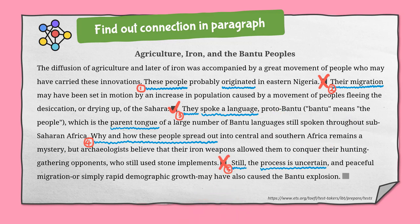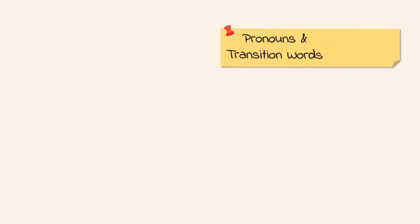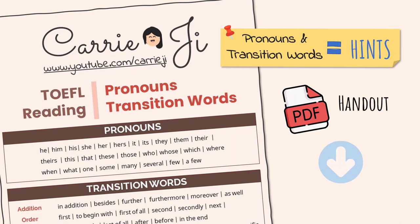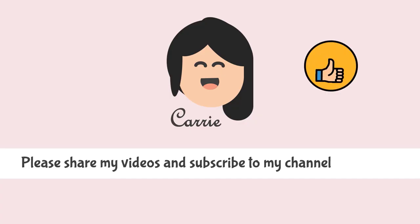If you plug the highlighted sentence into the fourth square, no explanation follows it, so the fourth square must be wrong too. Pronouns and transition words are hints for plug-in questions. I've summarized some common pronouns and transition words for you — the link to this handout is in the description below. You can download it later. Now you can solve plug-in questions easily.